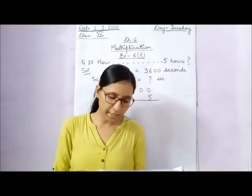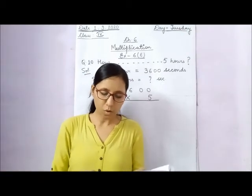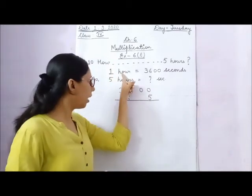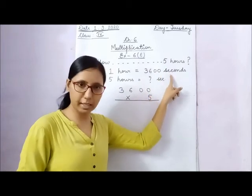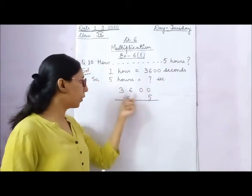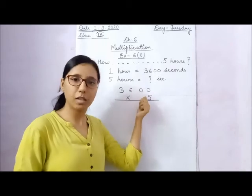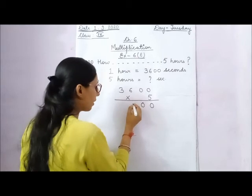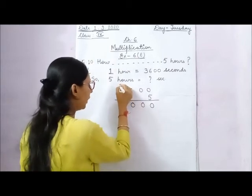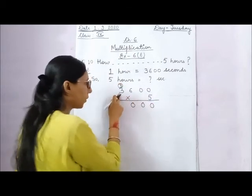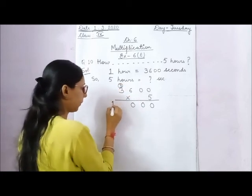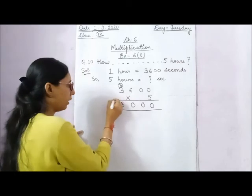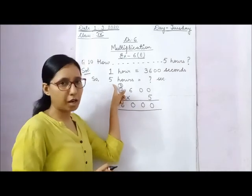Question 10: How many seconds are there in 5 hours? Remember, in 1 hour there are 3,600 seconds. So in 5 hours, multiply 3,600 by 5: 5 into 0 is 0, 5 into 0 is 0, 5 into 6 is 30, write 0 and carry 3; 5 into 3 is 15, plus 3 is 18. So there are 18,000 seconds in 5 hours.